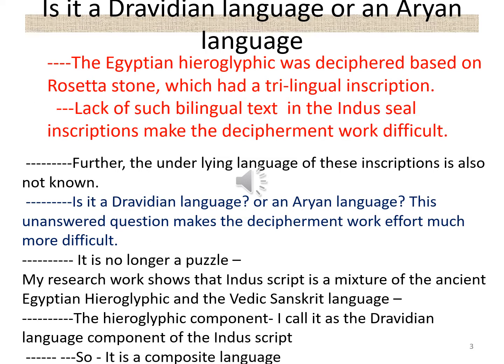Is it a Dravidian language or an Aryan language? The Egyptian hieroglyphic was deciphered based on the Rosetta Stone, which had a trilingual inscription. Lack of such bilingual texts in the Indescript inscriptions makes the decipherment work difficult. The underlying language of these inscriptions is also not known. My research work shows that Indescript is a mixture of the ancient Egyptian hieroglyphic and the Vedic Sanskrit language. The hieroglyphic component I call the Dravidian language component of the Indescript — so it is a composite language.